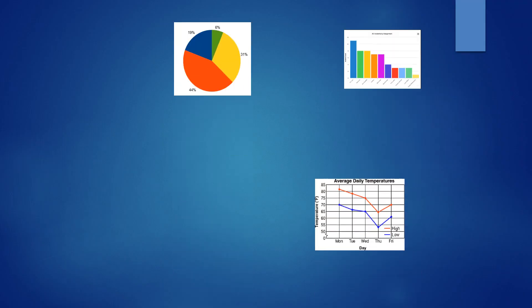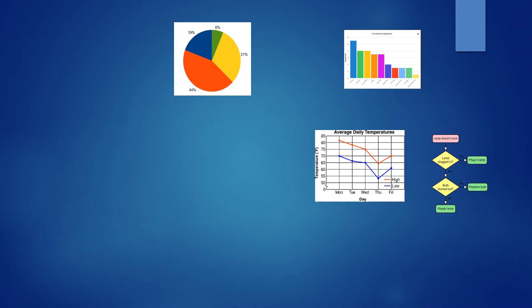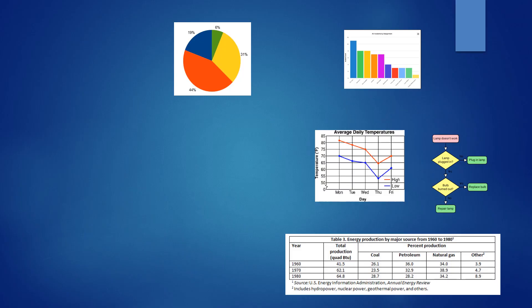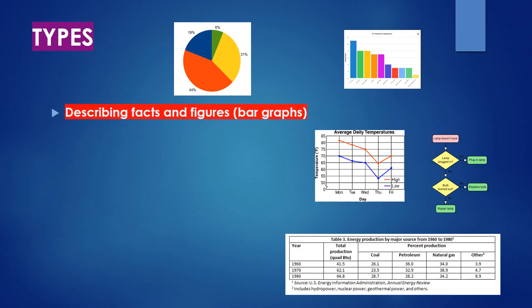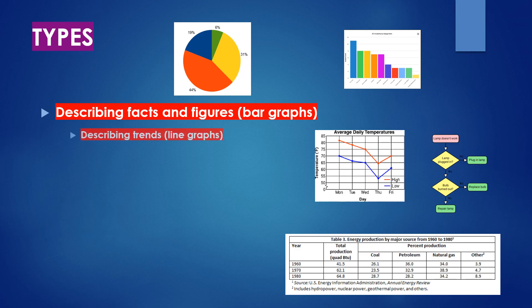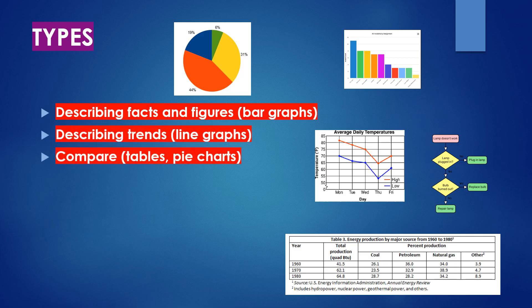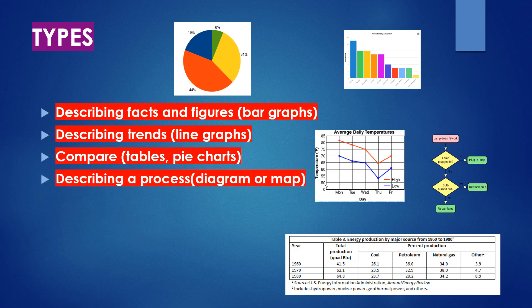Now let's take a look at the types of graphs that we can get in the exam. It can be anything like a pie chart, bar graph, line graph, table, or flow chart. Describe facts and figures through bar graphs, describe trends through line graphs, make comparisons through tables and pie charts, describe a process diagram or a map, and describe a flow chart.